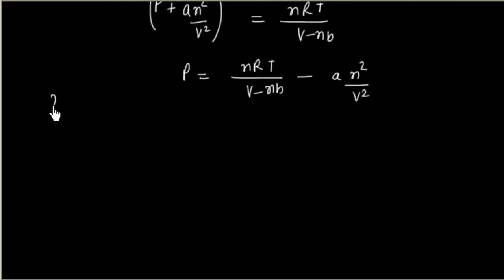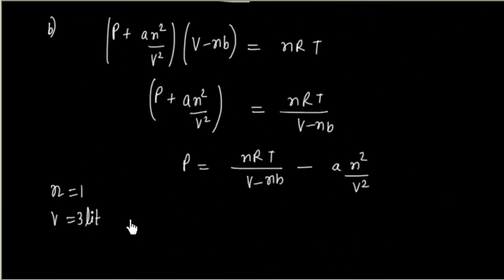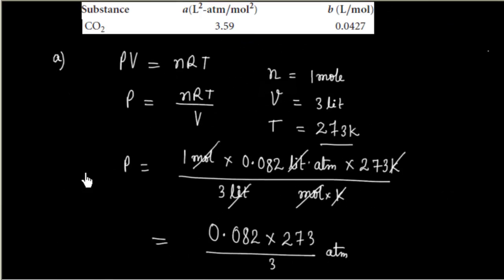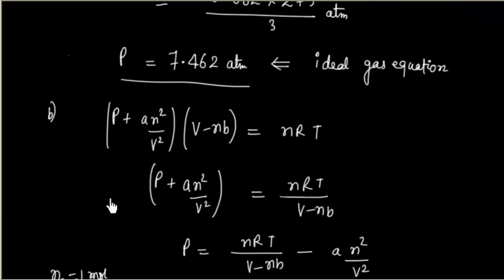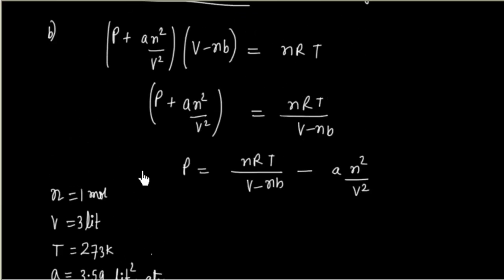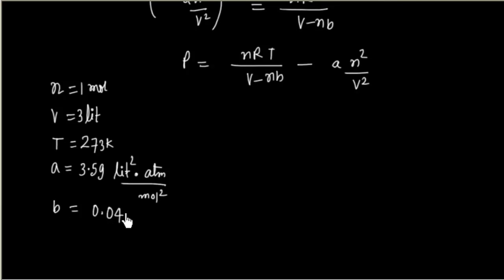Number of mol is given, n is 1 mol, and V is 3 liter. Temperature is 0 degree centigrade, 273 Kelvin. The value of A and B for CO2 gas is also known. A is 3.59, and unit is L squared atmospheric pressure divided by mol squared. B is 0.0427, and this is L per mol.